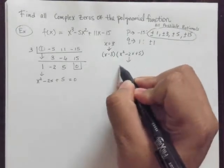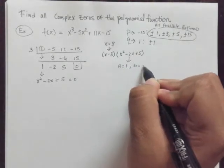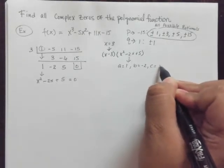So what I'm going to do here is use the quadratic formula now. a equals 1, b equals negative 2, and c equals 5.